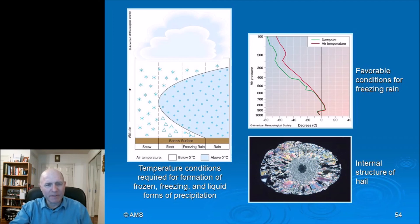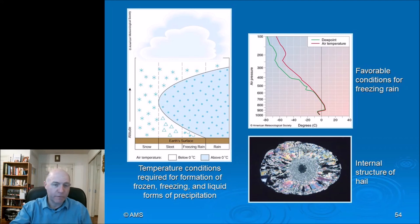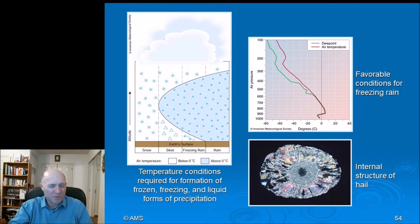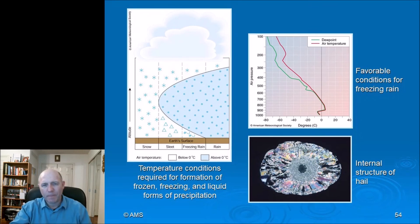Schematics showing the temperature profiles required for snow, sleet, freezing rain, and rain: everything starts as snow aloft, then if there is a layer above freezing at a few thousand feet the snow melts and becomes liquid. If the only below-freezing air is close to the ground, you get freezing rain. If there is slightly more distance between the above-freezing layer and the ground, the refreezing produces sleet — shown by a triangle, the weather symbol for sleet.